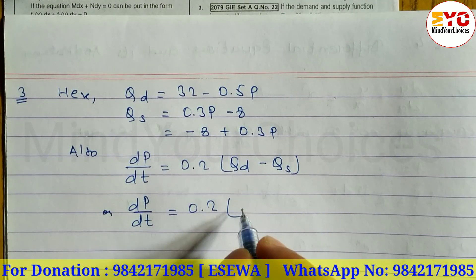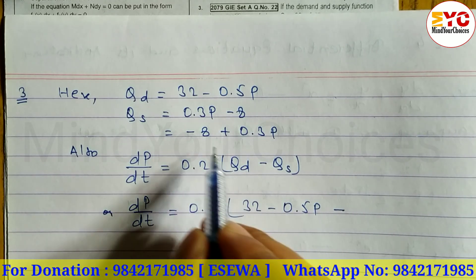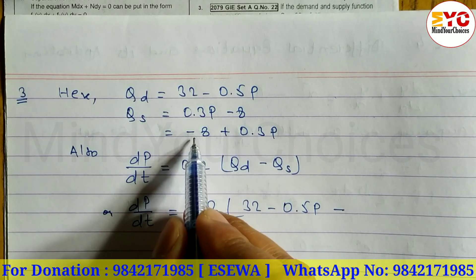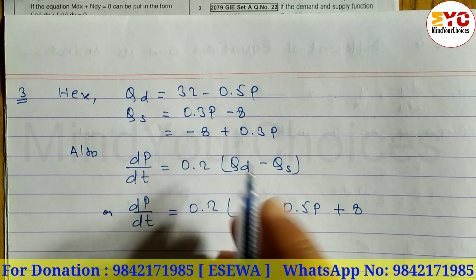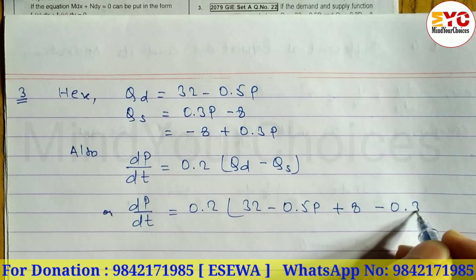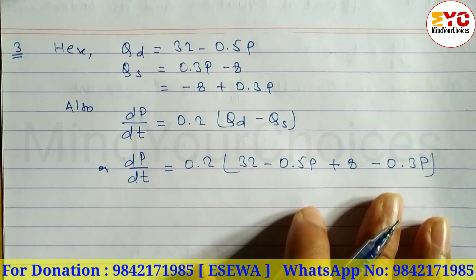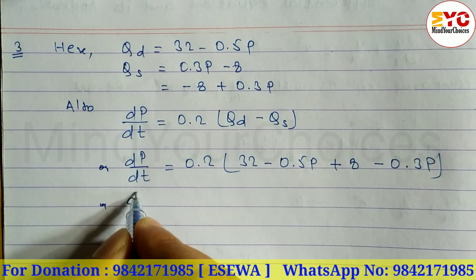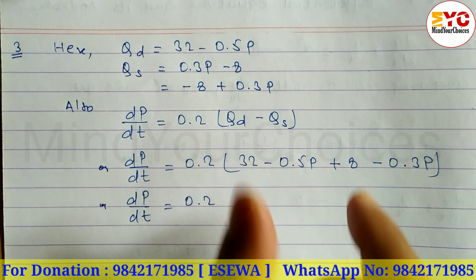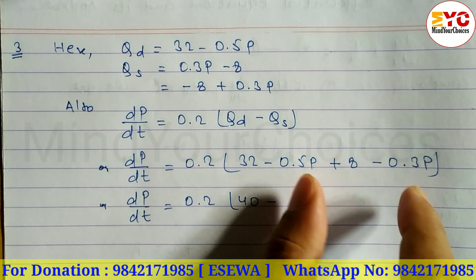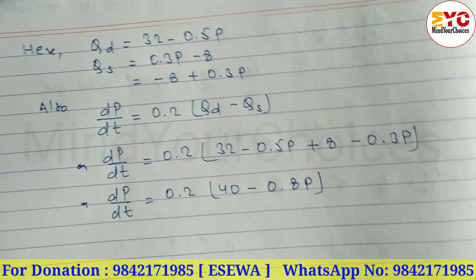Substituting qd and qs into the bracket: dp/dt equals 0.2 times (32 minus 0.5p minus (negative 8 plus 0.3p)). Adding the constants gives 40, and combining the p terms gives negative 0.8p. So dp/dt equals 0.2 times (40 minus 0.8p).